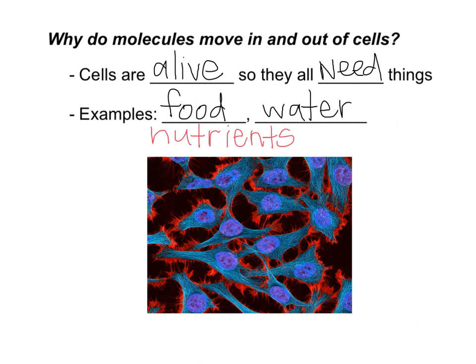Everything we're going to talk about today — the reason cells are doing these things — is because cells need things. And then they also need to get rid of things. Think of us: we get rid of waste products. Cells are going to do the same thing. If there's an overload of a certain nutrient, they're going to get rid of it. If there's a waste product, they're going to push it out. So we talk about this because cells are alive and active, doing these things in every cell of your body.